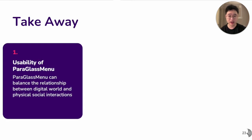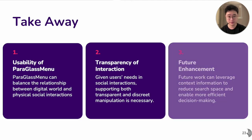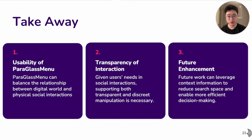We have three takeaway points from this research. First, Paragraphs Menu can help users balance digital interaction needs with physical-social interactions. Second, given users' needs in social settings, supporting both discrete and transparent manipulation is necessary. Third, future work can improve multitaskability by leveraging context information to reduce search space and enable more efficient decision-making — for example, with user permission, the system could analyze conversation content and provide recommended actions. For more details, please read our paper. Thank you.